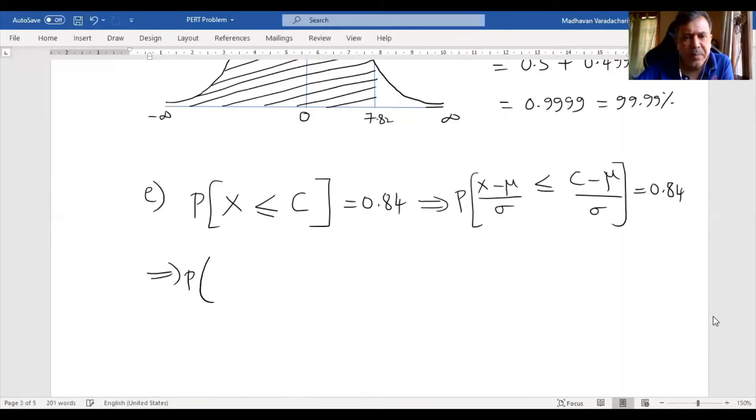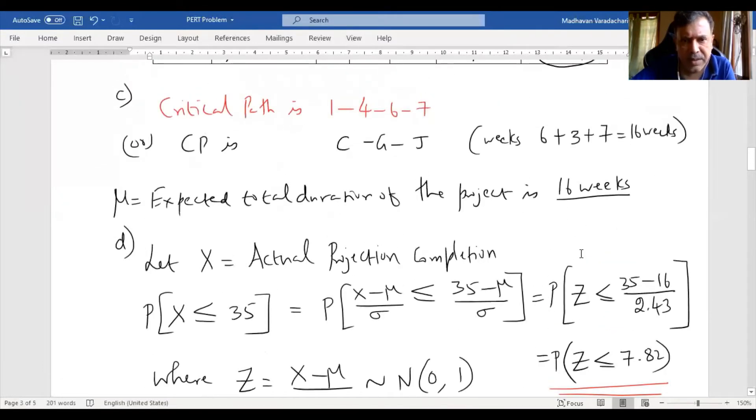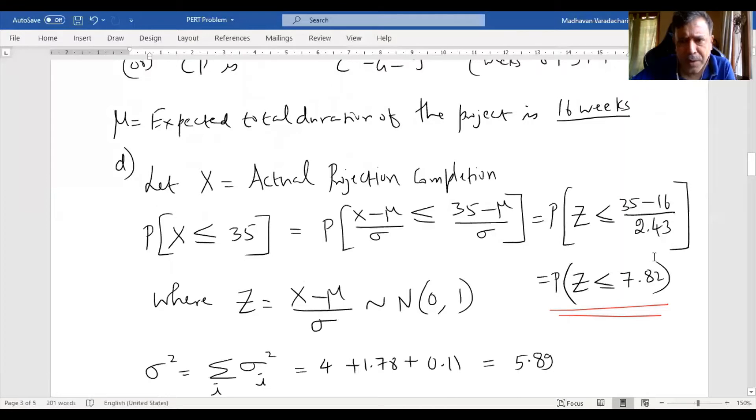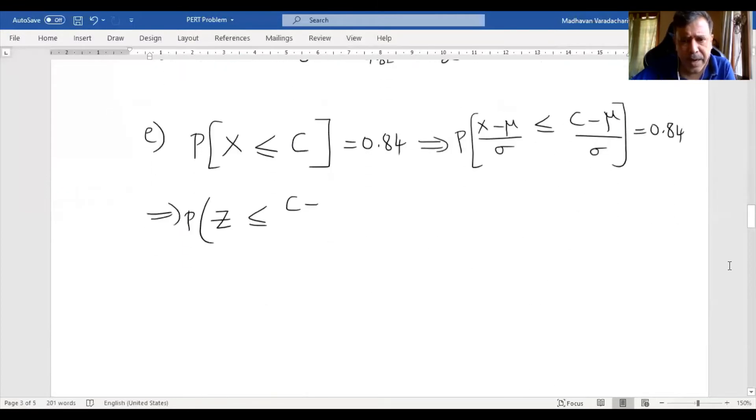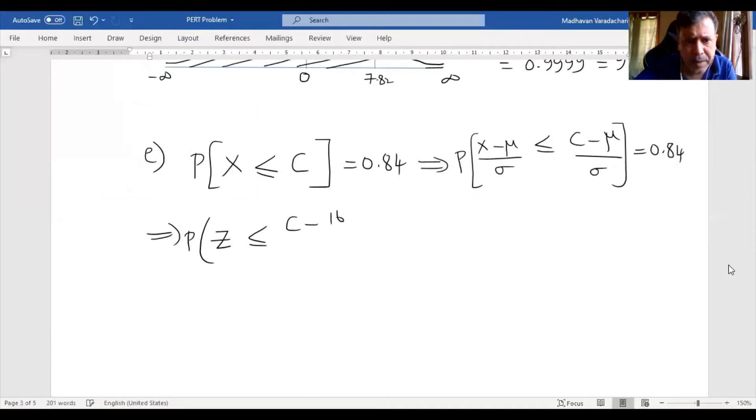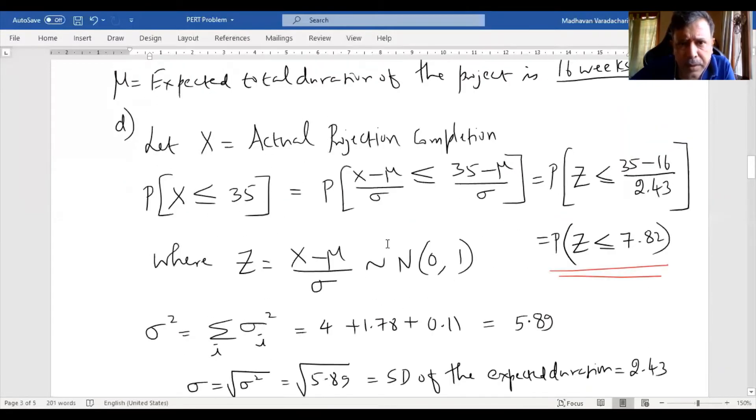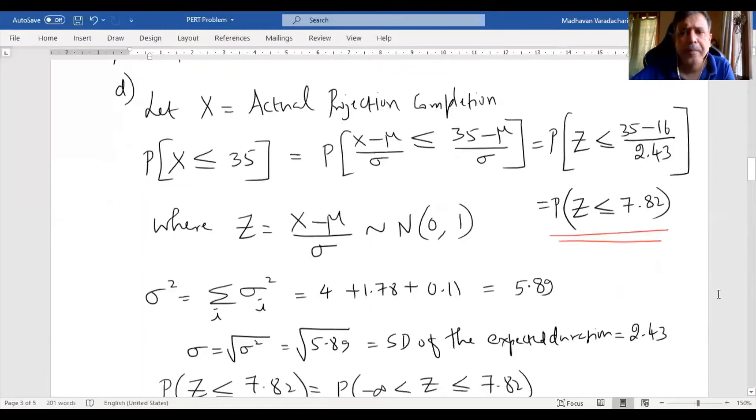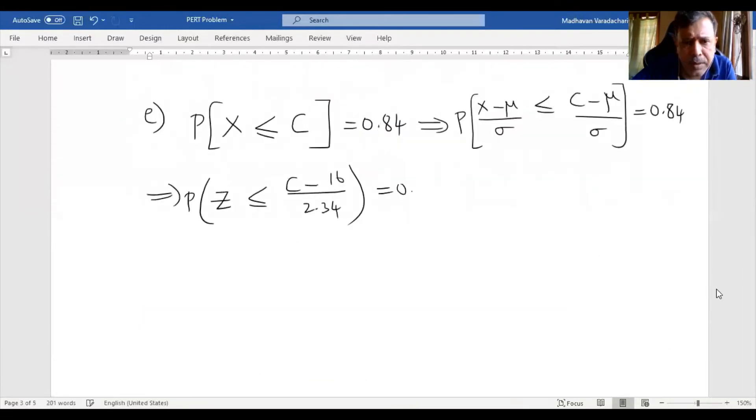Subtract both sides by μ, divide both sides by σ. This equals 0.84. We know X minus μ by σ is our z value. Let us substitute the μ value, which we found is 16 weeks, and standard deviation 2.43.